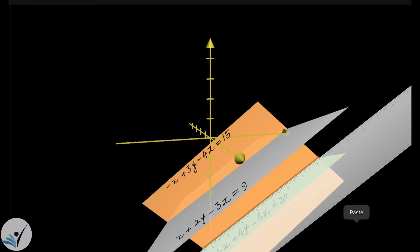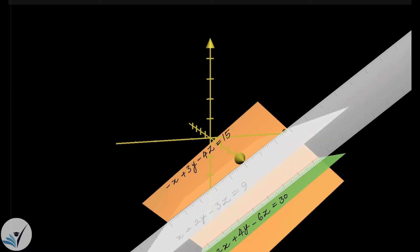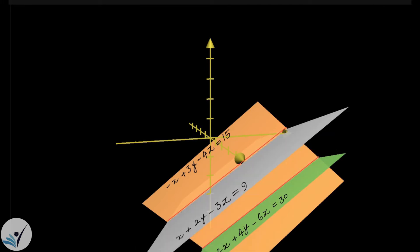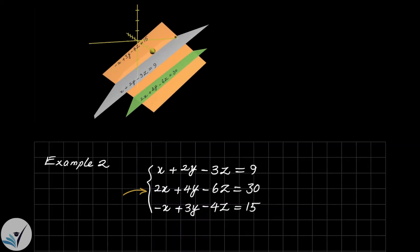This is one line and this is the other line. These two lines are the intersections. As you can see, these two lines are parallel, and as a result there is no solution for this system of equations. Let's go back to the equation form and see what we can get from our row reduction.